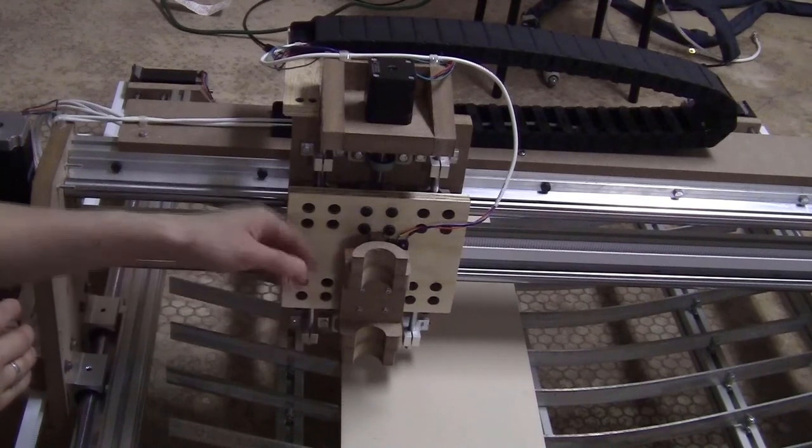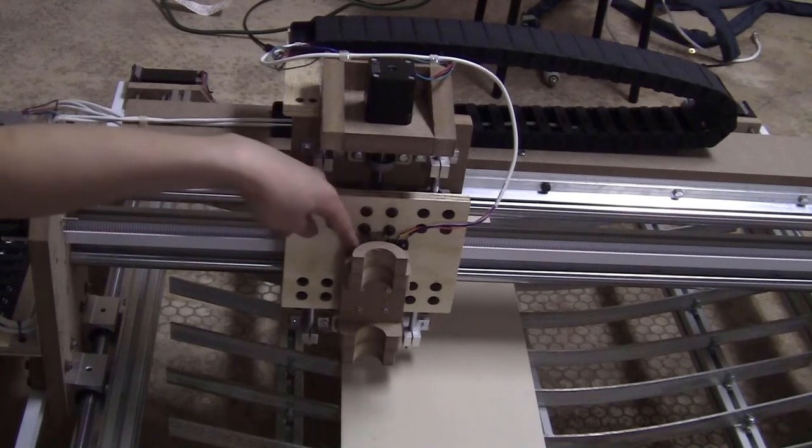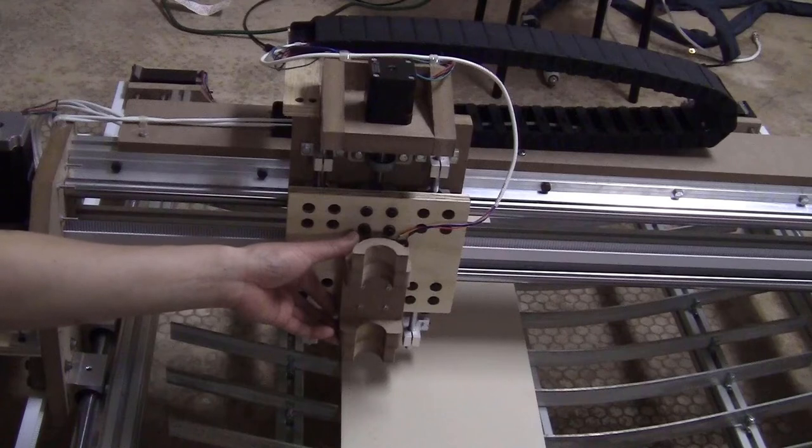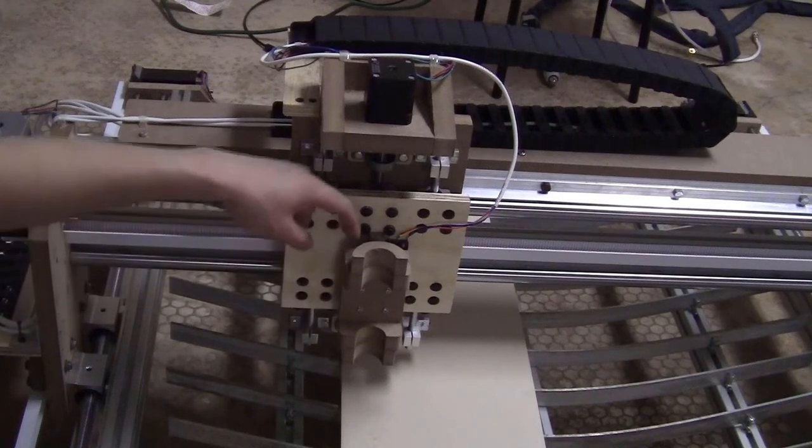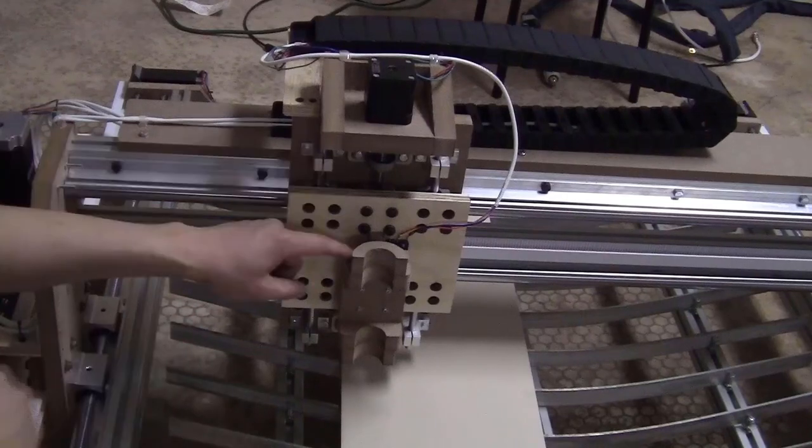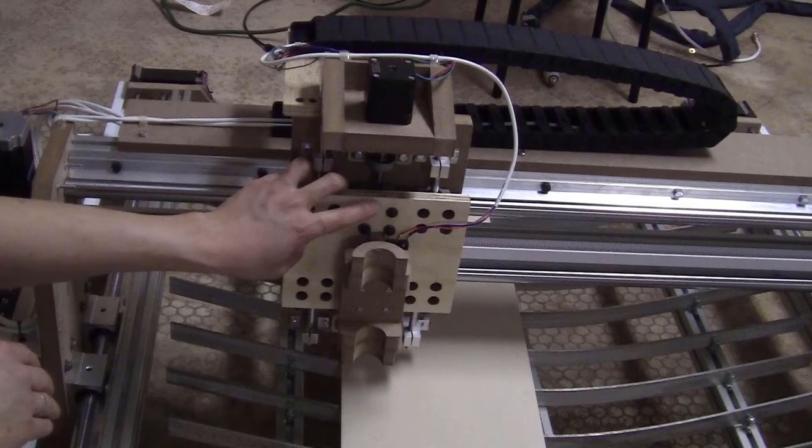So I need to figure out something like a spring setup to press it down, so this floating head setup still works but it always has a pressure to press it down so the air doesn't blow it up. Let me figure out something on the computer and make it and attach it here.